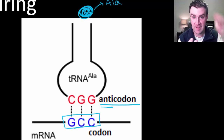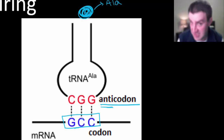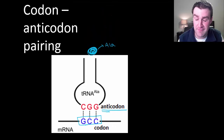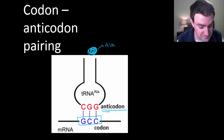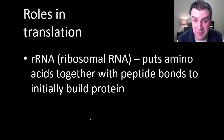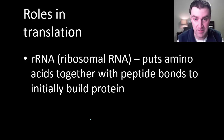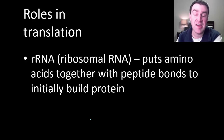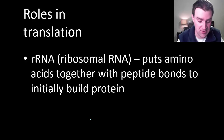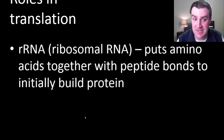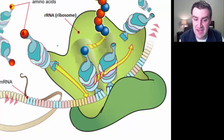Then the next tRNA would bring the next amino acid. Proteins are made of thousands of amino acids, so each tRNA brings its amino acid to the right spot. Now let's talk about rRNA's role. rRNA is inside the ribosome and it is actually putting the amino acids together as they are brought in one at a time by the transfer RNAs. Technically, peptide bonds are what link together amino acids, so it's the rRNA inside the ribosome that's actually starting to link together the protein.